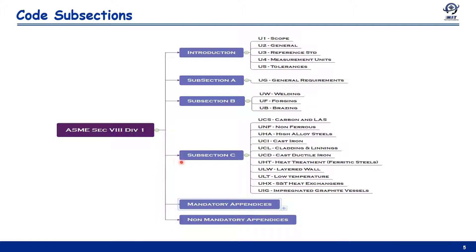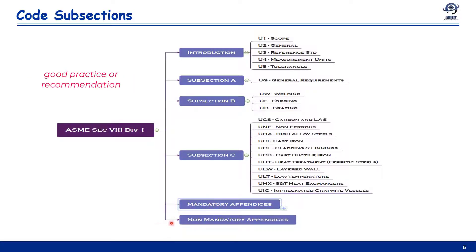Subsection C contains requirements related to specific materials: UCS for carbon and low-alloy steels, UNF for non-ferrous, UHA for high-alloy steels such as stainless steel, UCI for cast iron, UCL for cladding and linings, UCD for cast ductile iron, and other sections. Mandatory appendices cover subjects not addressed elsewhere in the code and are mandatory when applicable. Non-mandatory appendices provide information and suggested good practices that are not mandatory.